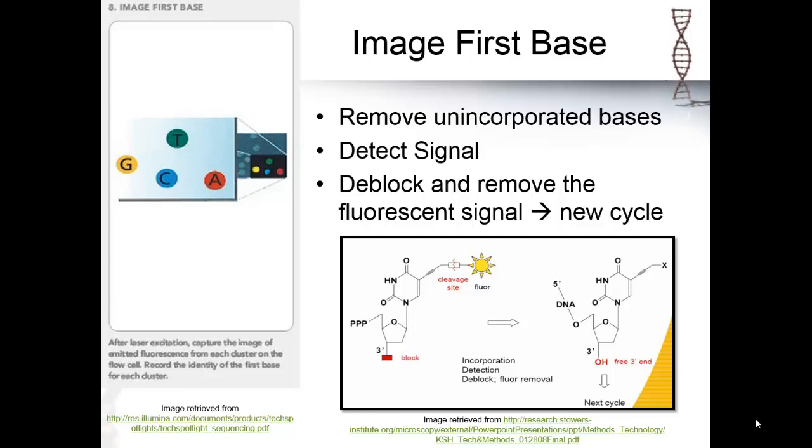These nucleotides were also modified so that there is a molecule on the 3' end of the sugar. This means that the polymerase can only add one nucleotide to each of the newly forming sequences and is blocked from adding more until it is removed.